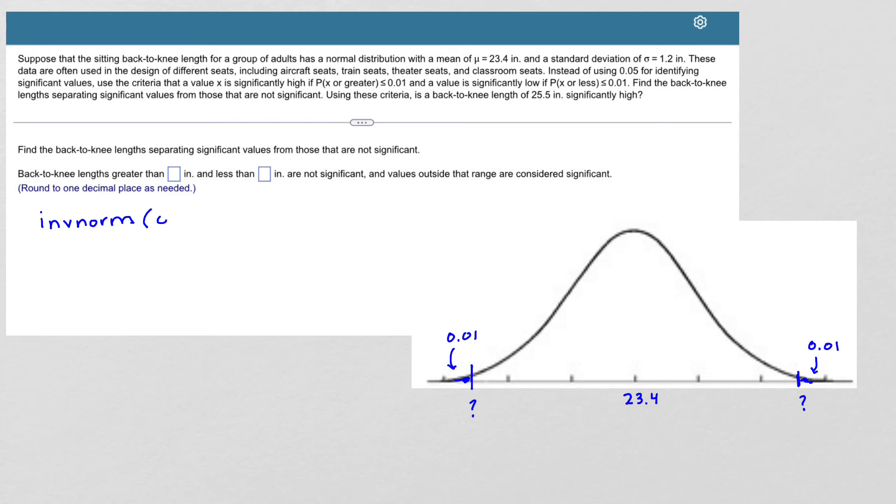So first I give the area, and if you have the stat wizard, that 0.01 is your area. The mean is 23.4 and standard deviation is 1.2. So when I put this into the calculator and we're going to round to one decimal place, so this would be 20.6.